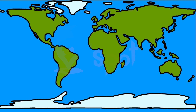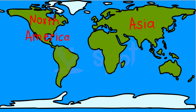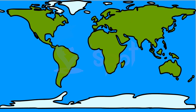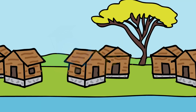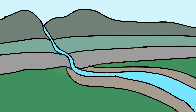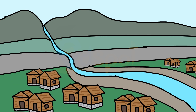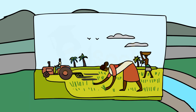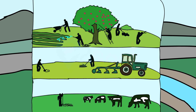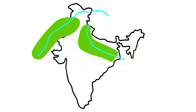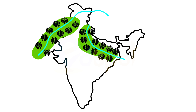Construction of transport networks is easy in plains. Thus, these plains are very thickly populated regions of the world. Some of the largest plains made by rivers are found in Asia and North America. In Asia, these plains are formed by the Ganga and the Brahmaputra in India, and the Yangtze in China. Plains are the most useful areas for human habitation — there is a great concentration of people as more flat land is available for building houses as well as for cultivation. Because of fertile soils, the land is highly productive.